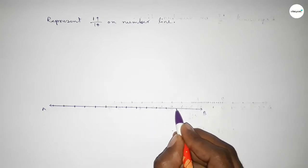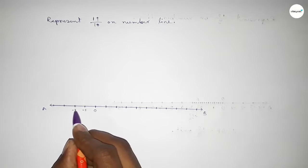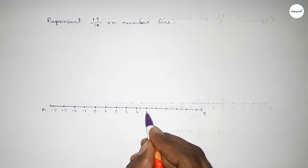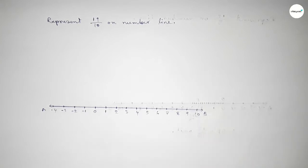To draw the number line, taking here zero. This side: minus 1, minus 2, minus 3, minus 4. This side: 1, 2, 3, 4, 5, 6, 7, 8, 9, 10.